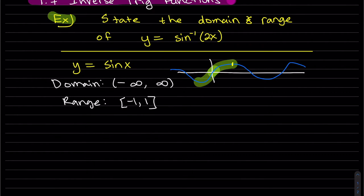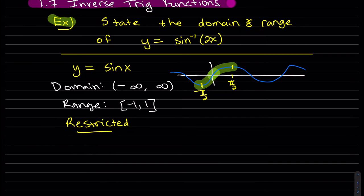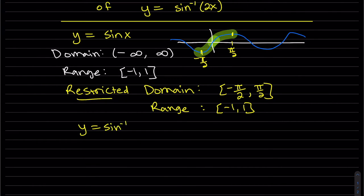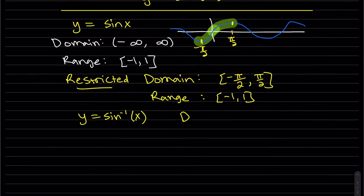So the top of this and bottom, this is pi over 2. So the restricted domain so that it's one to one, so that the y values don't repeat, is minus pi over 2 to pi over 2. And our range is the same. For our inverse, the domain and the range flop.